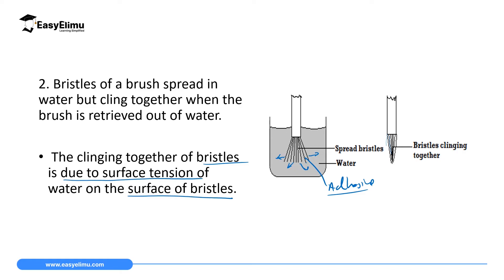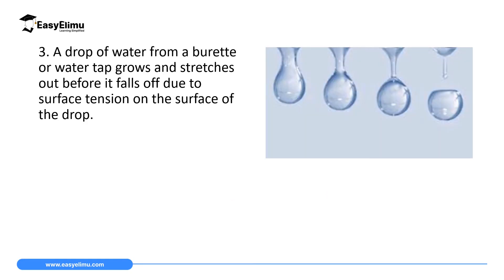The clinging together of these bristles is due to the surface tension of the water on the bristles. When the bristles are removed from water they come out with water, and the water on the bristles will want to maintain the smallest surface area, pushing the bristles together and forming a smooth, thin stretched elastic skin around them.